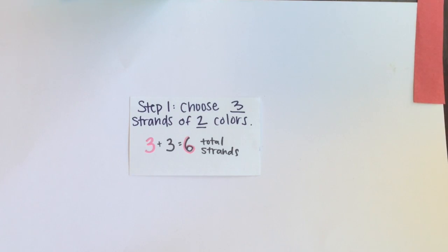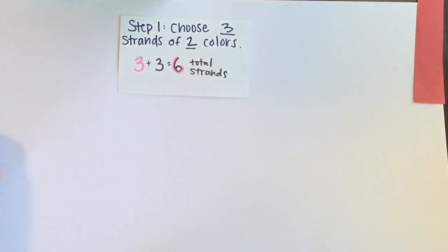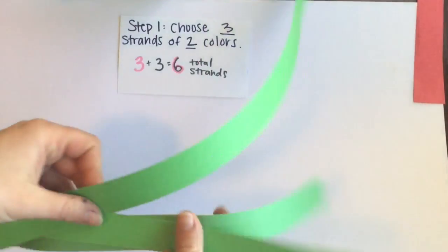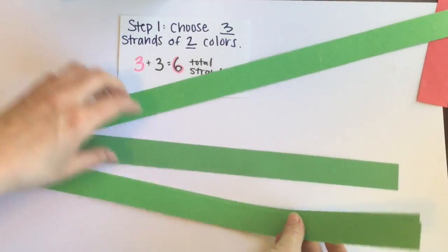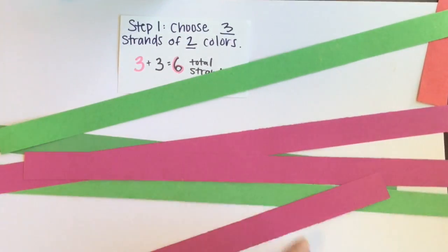The first step is you're going to choose three strands of two colors so you're gonna end up with six total strands. So I'm going to pick three green strands and three magenta strands.